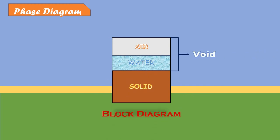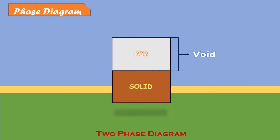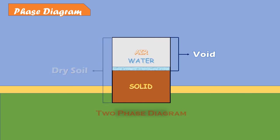In a phase diagram, air and water commonly form voids. If the voids are fully filled with air, there is no water phase. The diagram will be called a two-phase diagram and the soil mass will be dry.